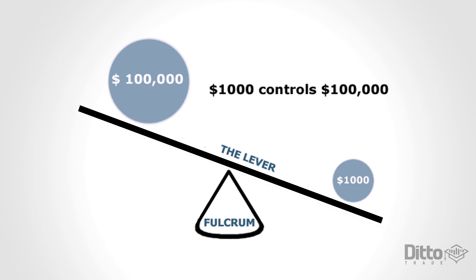If we want to trade $100,000 of currency with a margin of 1%, a trader will only have to deposit $1,000 into their margin account in order to execute the trade.